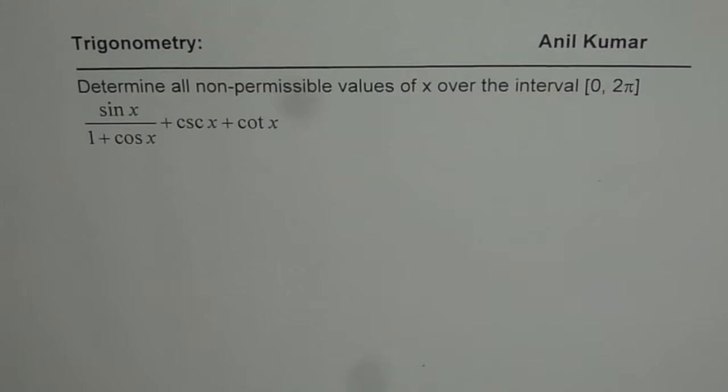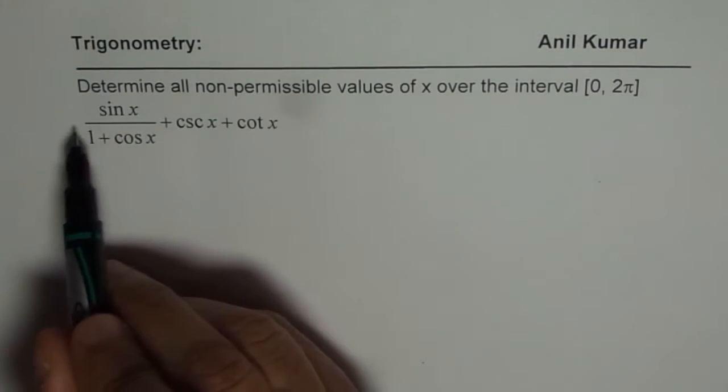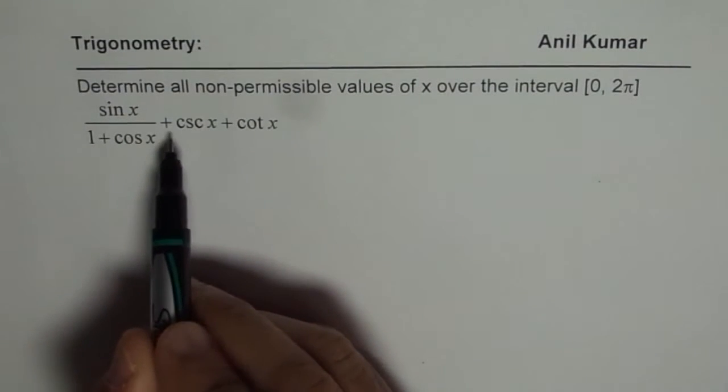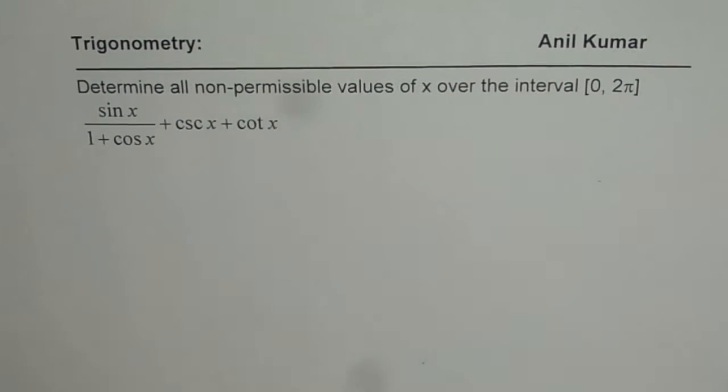I am Anil Kumar and now let us understand what are the restrictions on our trigonometric ratios. The question here is, determine all non-permissible values of x over the interval 0 to 2π. So we have an expression, sin x over 1 plus cos x plus cosecant x plus cotangent x.